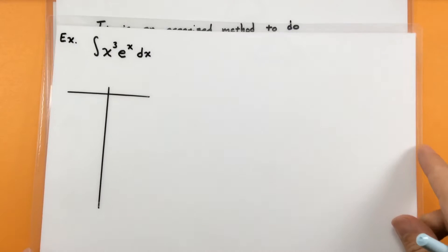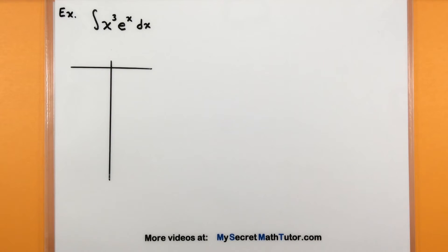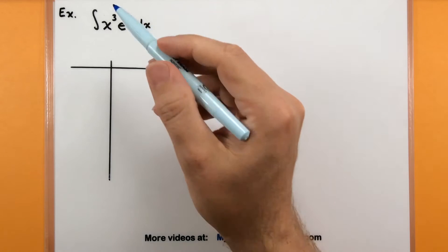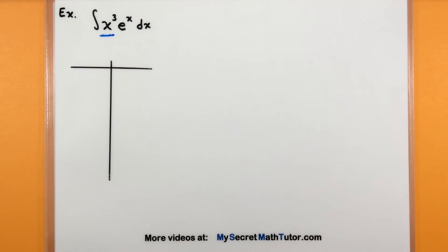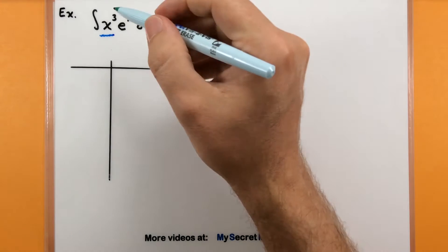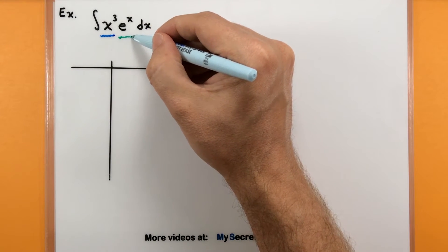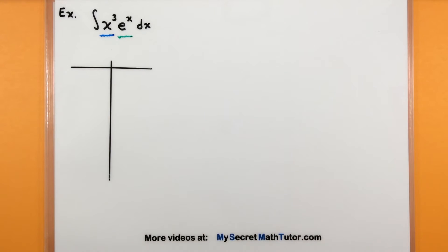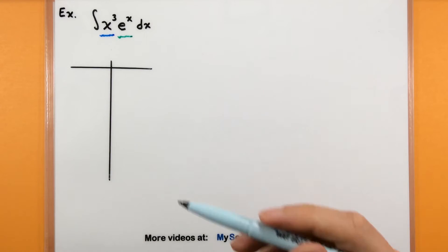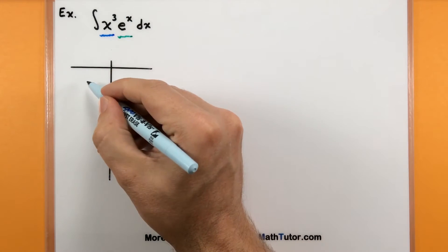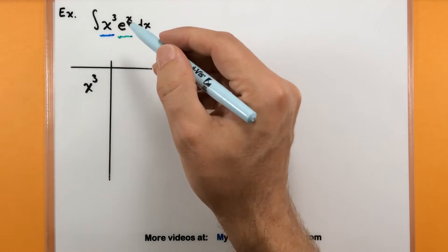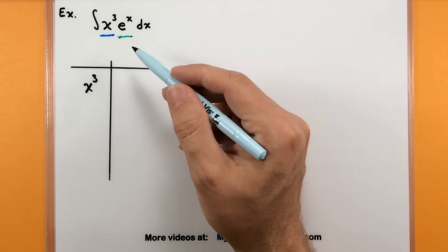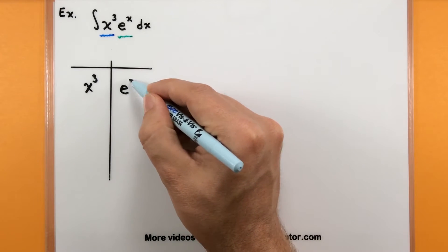In this first problem, we're just going to get a feel of how the method works. When doing integration by parts, the first key step is identifying a piece where you can take the derivative — maybe something like this x cubed — and another piece where you can easily take the anti-derivative, like e to the x. What we're going to do with each of these pieces is put them into our table.